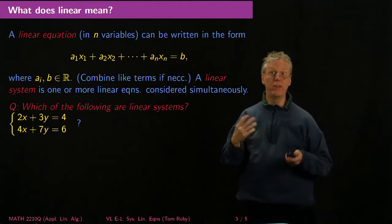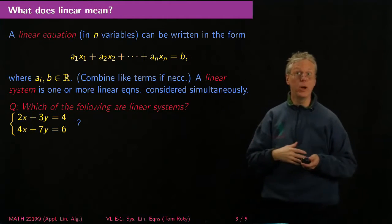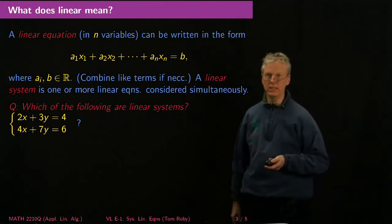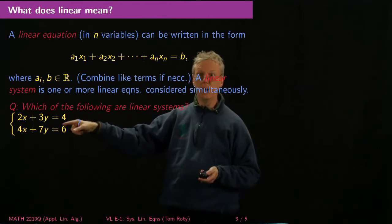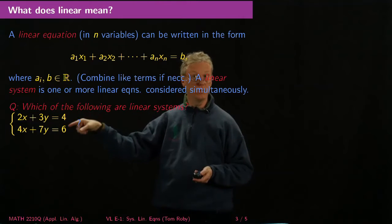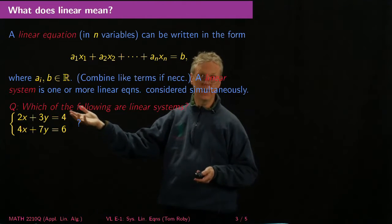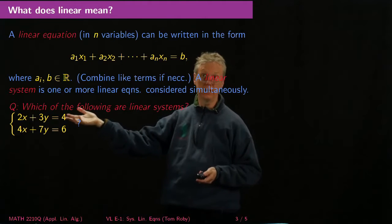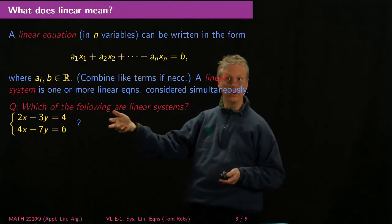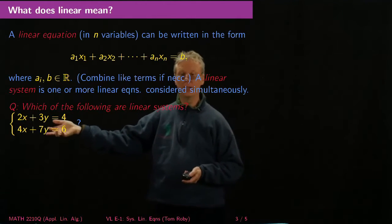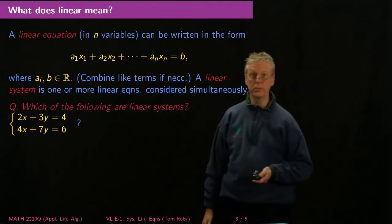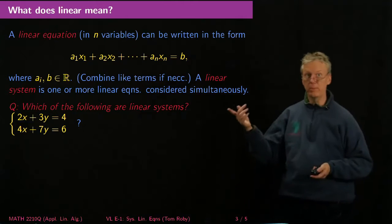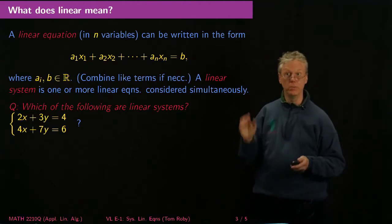And so a linear system will be if I have one or more linear equations, and I consider them simultaneously. So when I write a system like this, I want to know what values of x and y both satisfy 2x + 3y = 4, because there's infinitely many that satisfy just the one equation, right, because I can just solve for one variable in terms of the other. But I also wanted the x and y to satisfy the second equation, 4x + 7y = 6. And we'll see at least for that particular equation that there's only one point that does that.